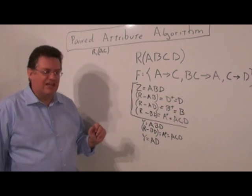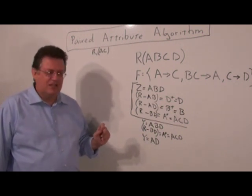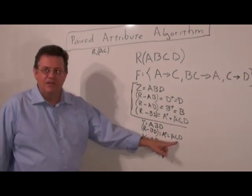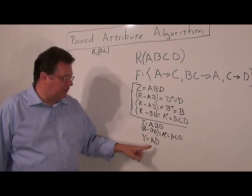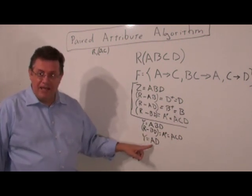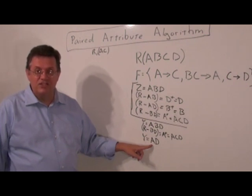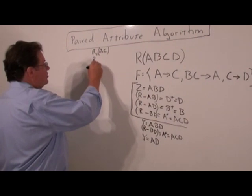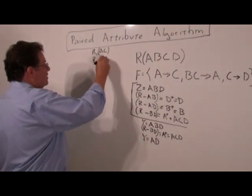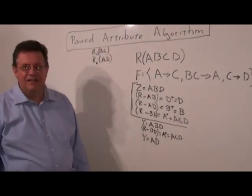We ask ourselves, what was the last thing that was included? And that was the D. So we actually remove the D from our set, and we return the pair AD, which is another relation subschema. So we put R2 as AD.